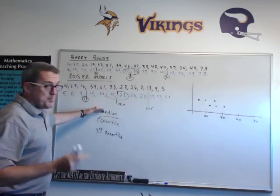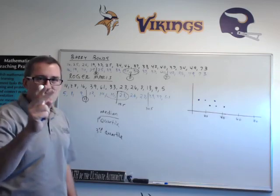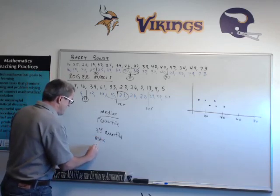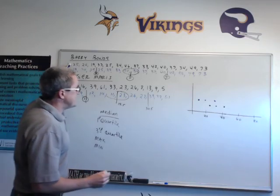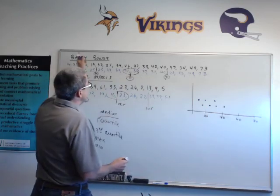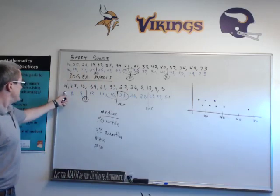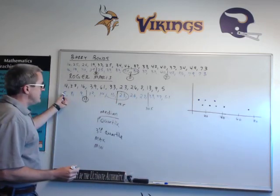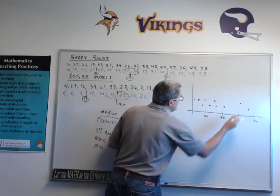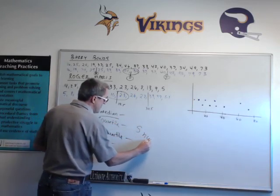So to summarize: we find the median, then the median of the left side — the first quartile — and the median of the right side — the third quartile. There are two more numbers we need: the maximum and the minimum. For Barry Bonds, the minimum is 16 and the maximum is 73. For Maris, the minimum is 5 and the maximum is 61. These five values — minimum, first quartile, median, third quartile, and maximum — are called the five-number summary.